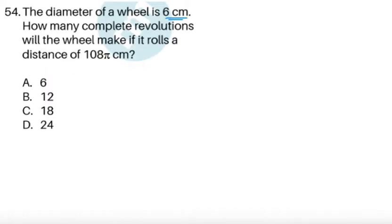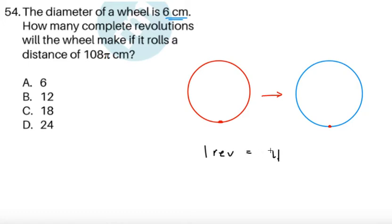Item 54. The diameter of a wheel is 6 centimeters. How many complete revolutions will the wheel make if it rolls a distance of 108π centimeters? It's very important to note that if we have a circle and a point here, as the circle rolls, for example to the right, this point is going to go around the circle and the next time it hits this point again, that would be one revolution. The circumference of the circle, in short, will equal one revolution.